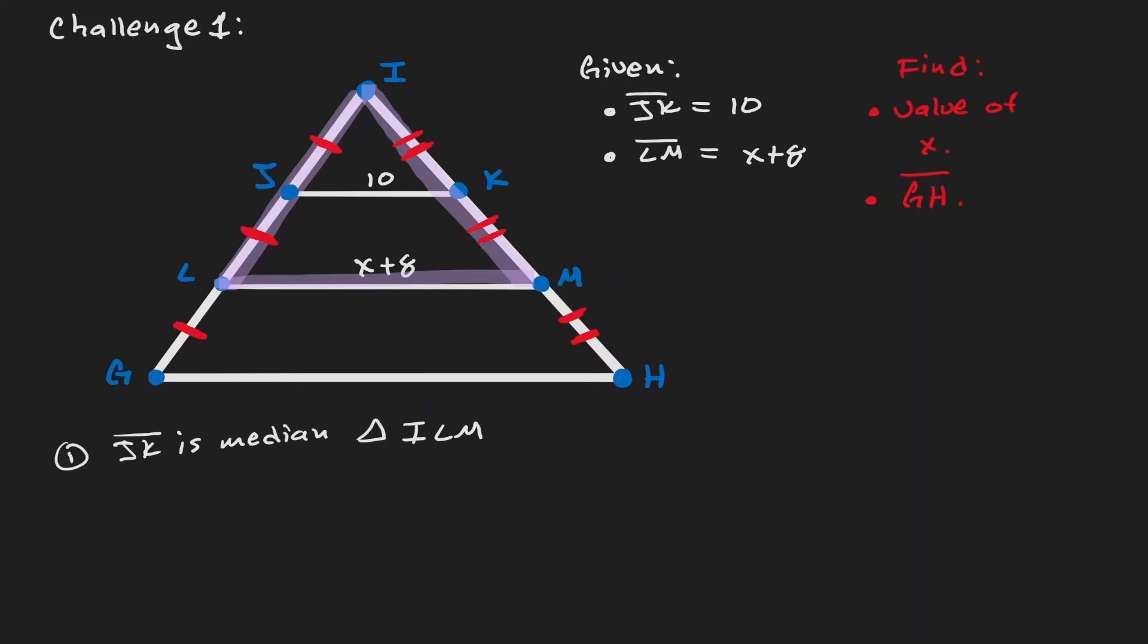And if that is the case, then we can apply properties of medians, where we know that the median is half the base. So let's plug in what we know. JK is 10. And LM is x plus 8.